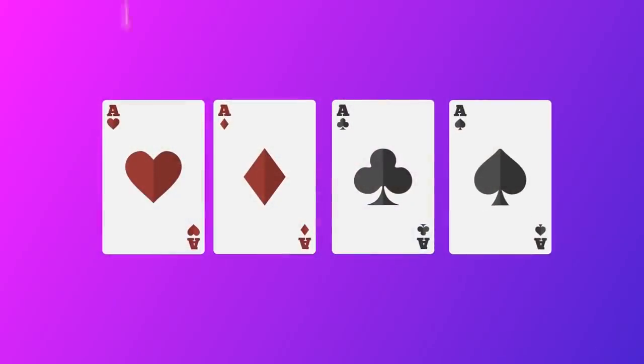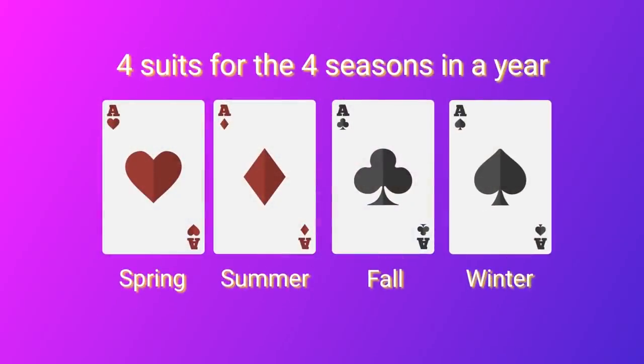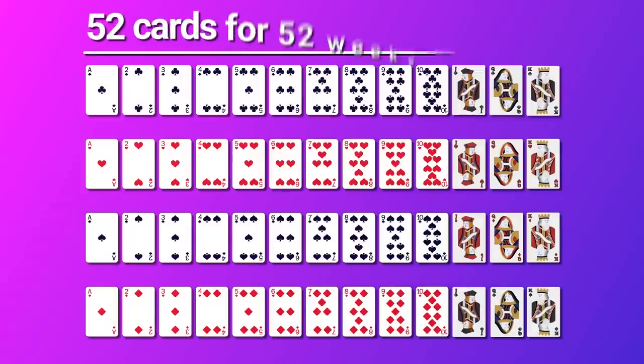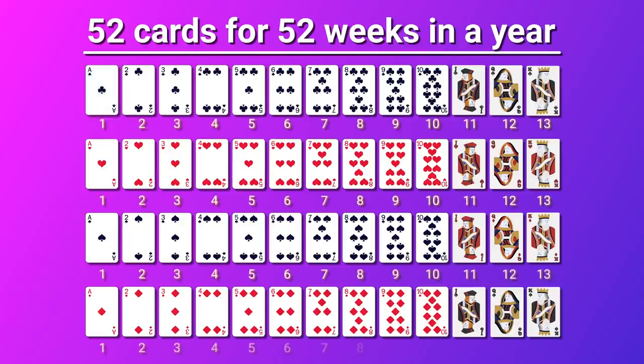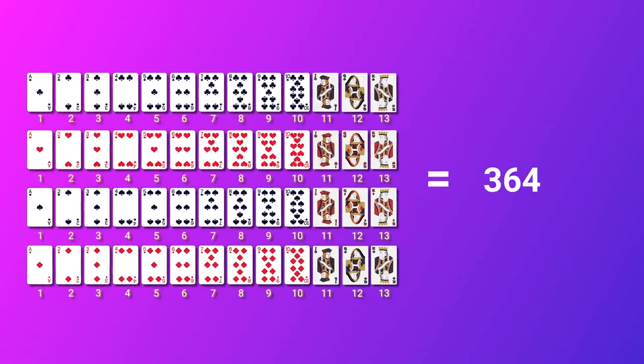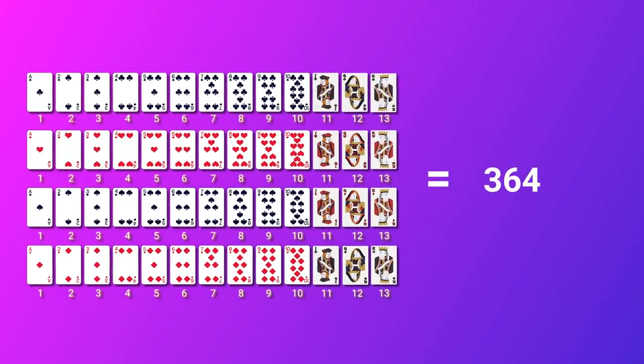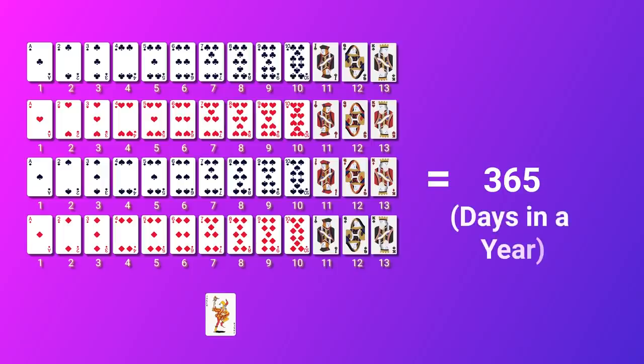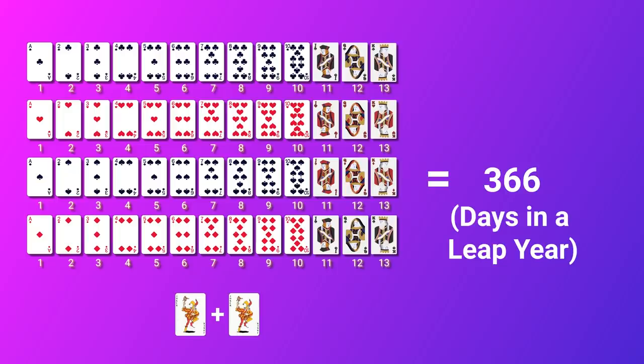In a standard deck, there are four suits for the four seasons in a year. There are 52 cards for the 52 weeks in a year, and if you let Ace have a value of 1, then all other card values follow from there up to 13. Adding up all the cards in the deck gets you 364. Add one Joker and you get 365, the number of days in a year. Add the second Joker and you get the number of days in a leap year.